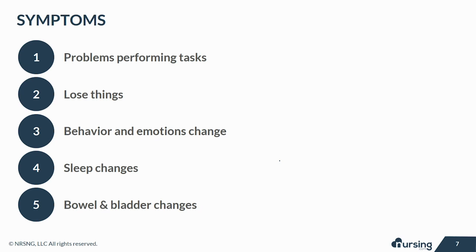People suffering from dementia begin having problems performing daily tasks like personal care, paying bills, and cooking. Usually, the skills that leave later are the personal care skills. They lose things and will sometimes accuse other people of stealing or moving them. You'll notice that the person you used to know isn't the same person now because their behaviors and emotions change — this is a huge thing in dementia patients. Someone that used to be nice and sweet can now be rude and agitated, or vice versa. The anxiety and frustration behind losing your skills and memories is honestly enough to make anybody's mood change.